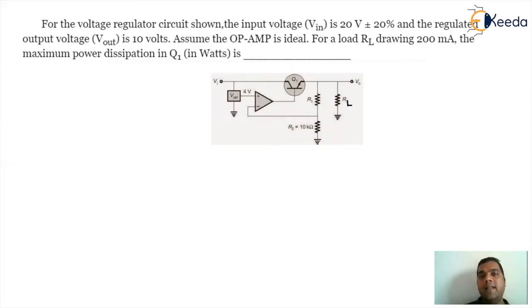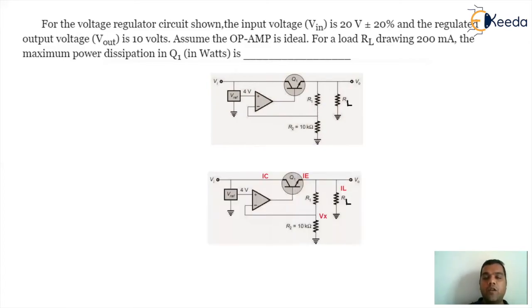So for that, the first thing we can see in the diagram carefully is that there is an op-amp with the plus pin of the op-amp at the reference voltage of 4 volt. Since the op-amp is ideal in nature, the plus pin potential is equal to the minus pin potential. So automatically the V inverting pin will also be at 4 volt. Now we are going for small notations. We are giving IC current, IE current, IL current, and the node as Vx. So if you observe, the value of Vx will be 4 volt because of the property of op-amp, and the load current given to us is 200 milliampere.